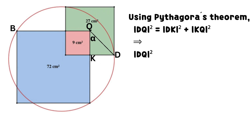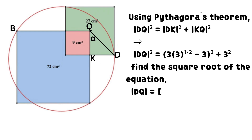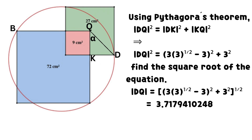Using Pythagoras' theorem, the square of line DQ equals the sum of the square of line DK and the square of line KQ. Substituting the values obtained, we get a new equation for DQ². Find the square root so that line DQ = 3.7179410248.